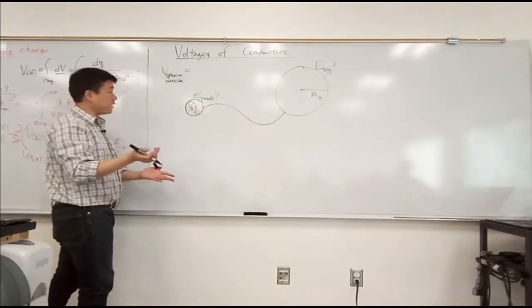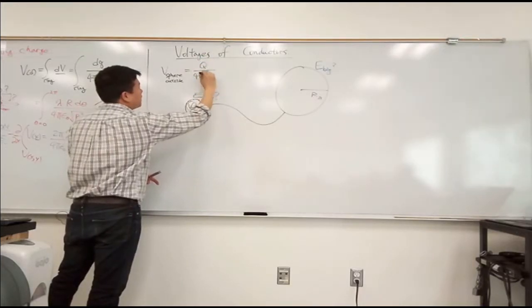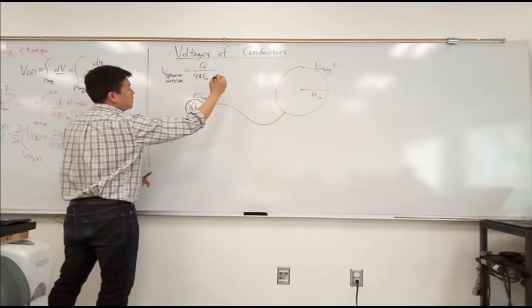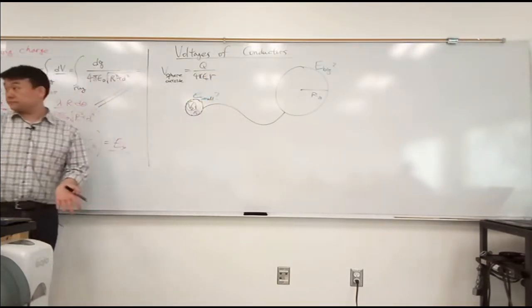Amount of charge, whatever that is, divided by 4 pi epsilon naught, the distance r, not r squared, distance r, right?